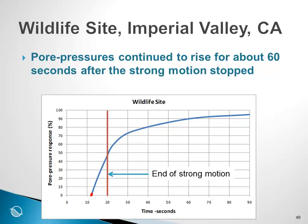Looking at the pore pressure response — or excess pore pressures — as the shaking started, the instrumentation indicated that pore pressures continued to rise. After about 20 seconds the shaking stopped, but significantly, the pore pressure continued to rise for quite some time after the shaking had stopped. The curious question is: what could cause this, or why would this happen?